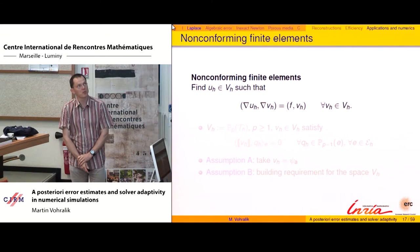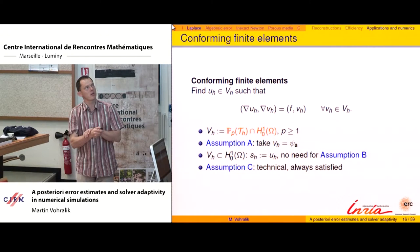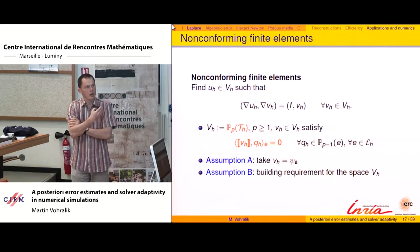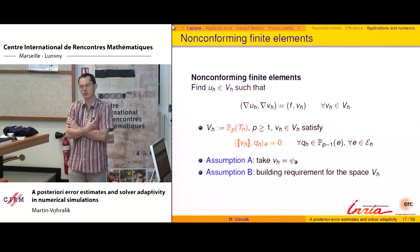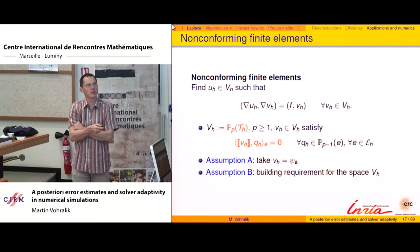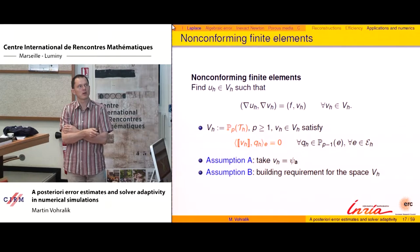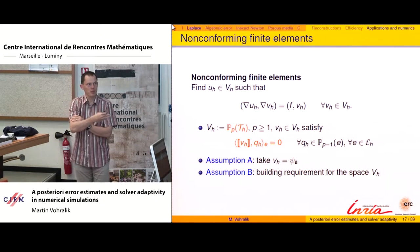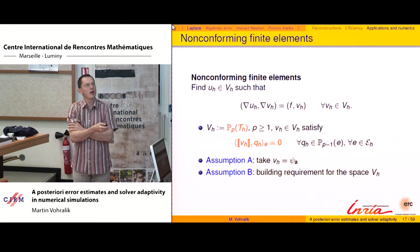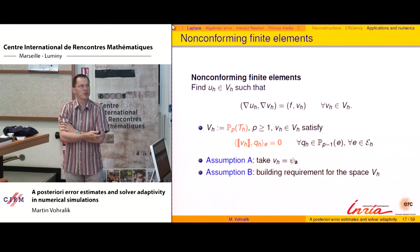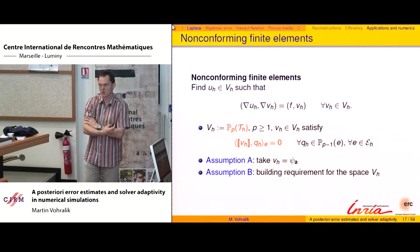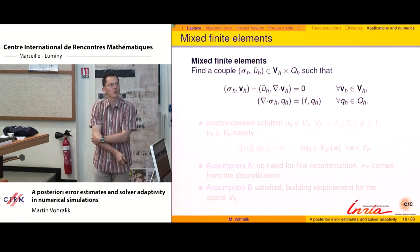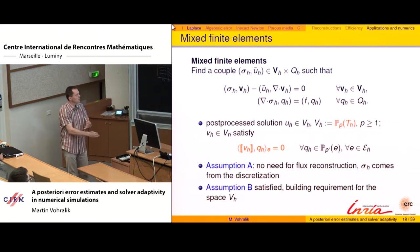Another example is the non-conforming finite element method, which writes similarly but gives an approximation u_h not in H^1_0 — still piecewise polynomials, but only weakly continuous with some orthogonality on the jumps. Assumptions A (Galerkin orthogonality), B (jump condition), and C are all satisfied. Mixed finite elements also fit perfectly into the framework.